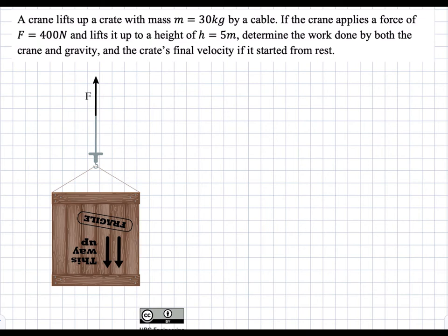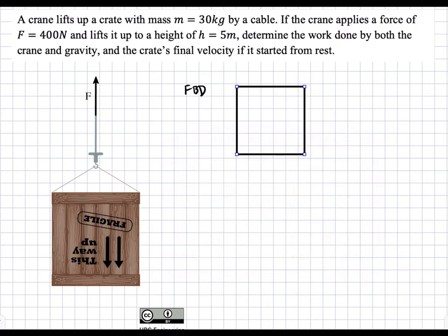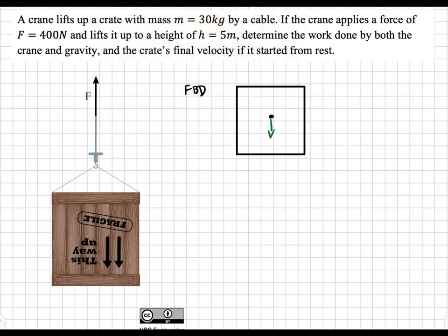So first we're going to start with our free body diagram, and we're going to add all our forces. At the center of gravity, we're going to add our force due to gravity, Fg. And then we have our force pulling up, which we're going to call F.